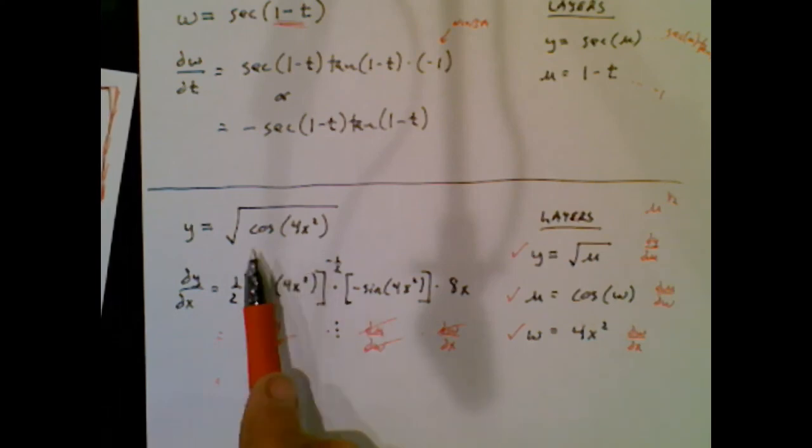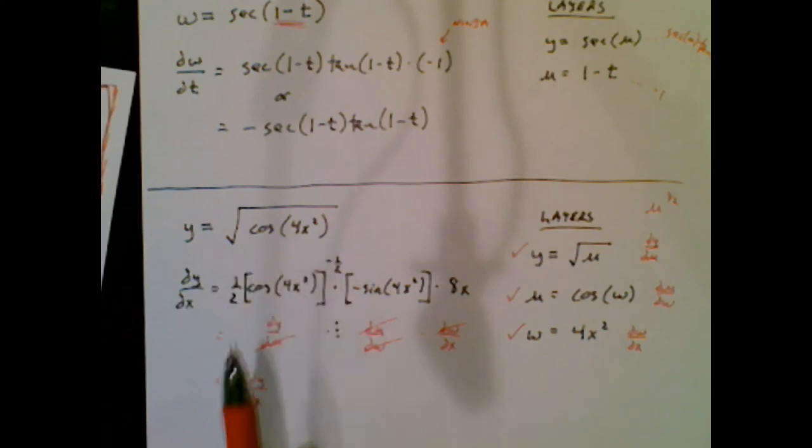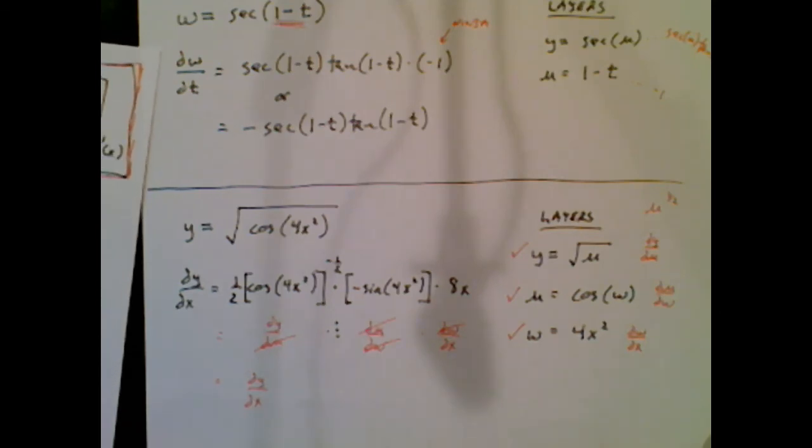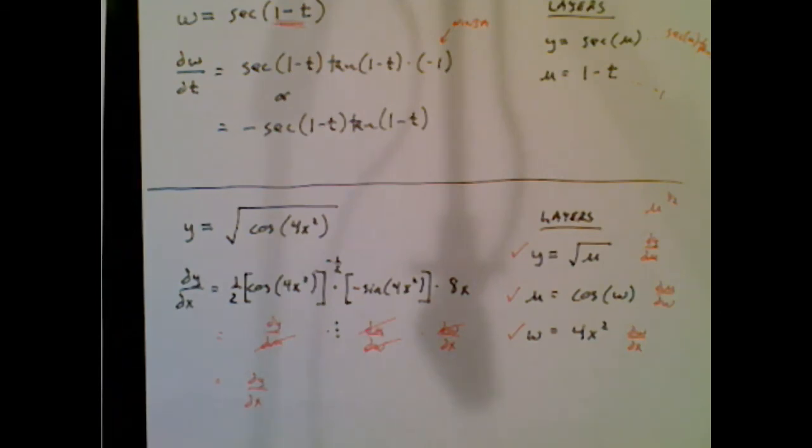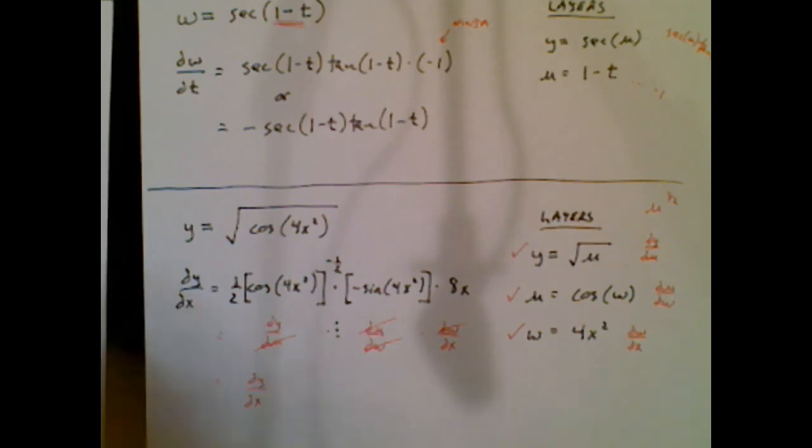You've probably noticed that the ninja or the chain rule is very, very stealthy. You've got to practice these, all these homework problems, to see these layers and to train your brain to see the layers. And I would venture to say that probably 90% of the derivatives on an AP test will include some version of a ninja.